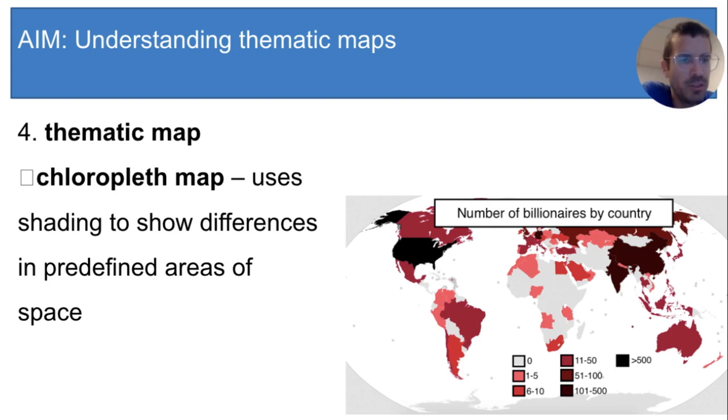Notice that you can only determine information about the predefined area. This map tells us how many billionaires live in the U.S., for example. It's black, so there are at least 500 of them. But the map doesn't tell us which states or cities or towns those billionaires live in because our smallest unit with a single color is a country. We don't know anything about smaller units like cities.